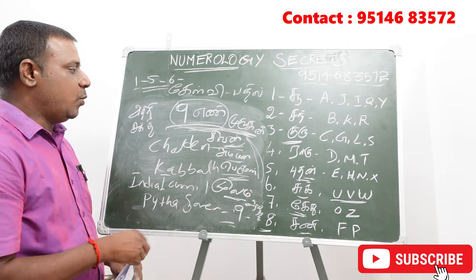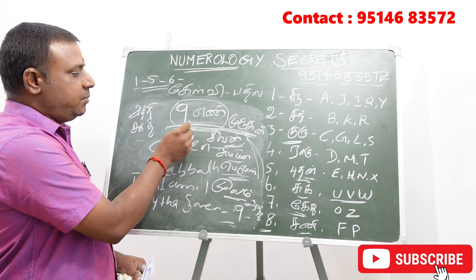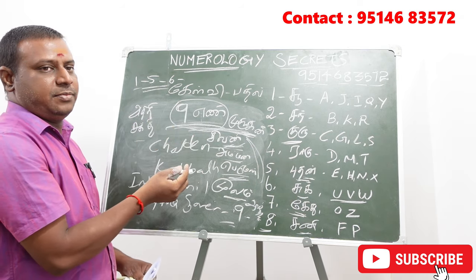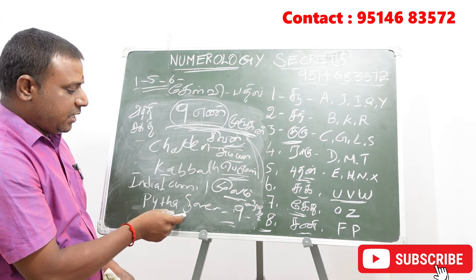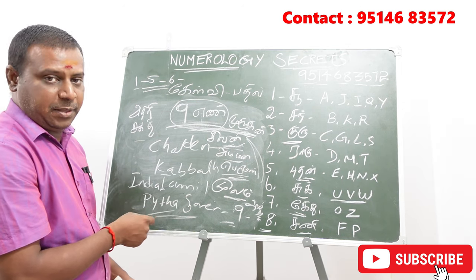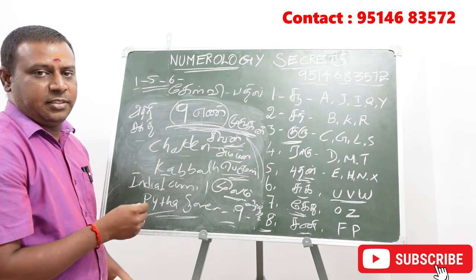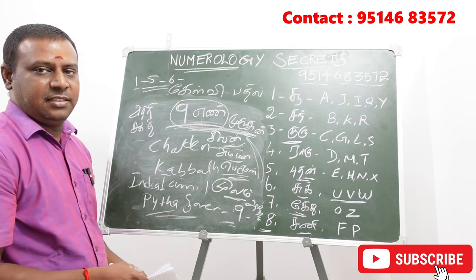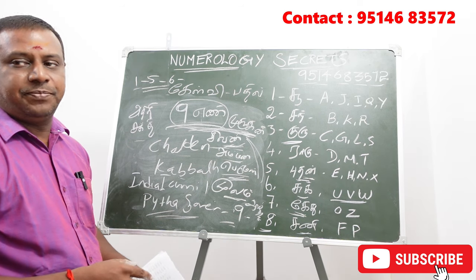You can see the same number, but the name is the same. If you see the same number, you can see the same number. If you need to find the same method, you can find it. But in Indian method, in Kabbalah method, in Chattin method, you can find the same number.